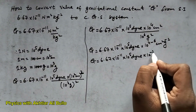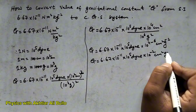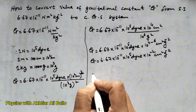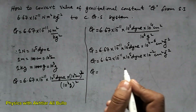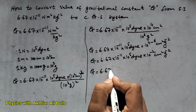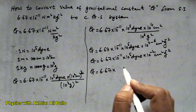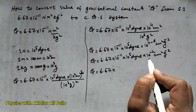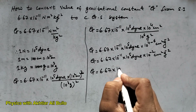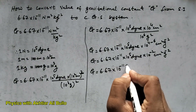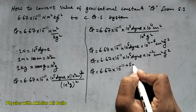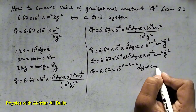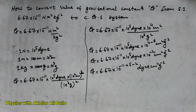The exponent becomes 10⁻² centimeter squared per gram squared. The value of the gravitational constant will be 6.67 × 10, and in multiplication when the bases are the same we add the powers: 10⁻¹¹ × 10⁵ × 10⁻² gives dyne centimeter squared per gram squared.